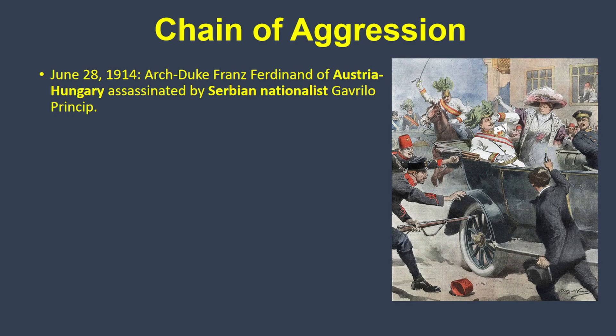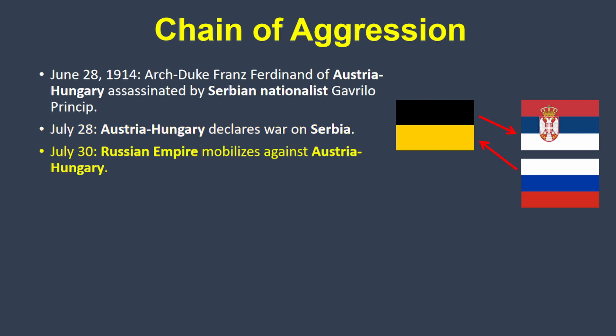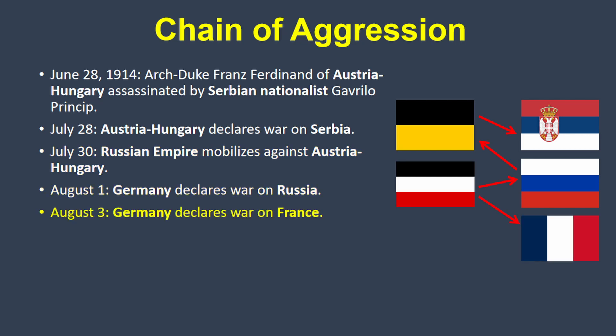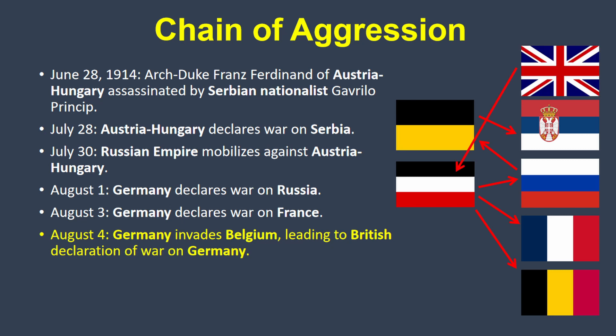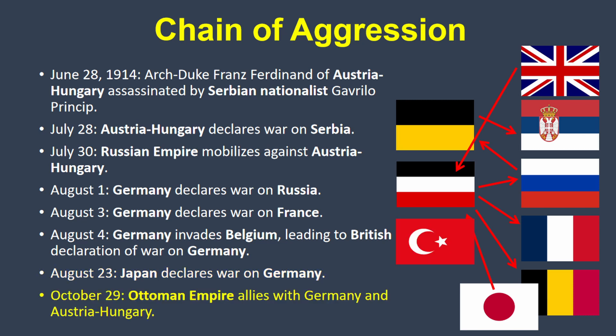On June 28th, 1914, Franz Ferdinand, the Archduke of Austria-Hungary, was assassinated by a Serbian nationalist. One month later, Austria-Hungary declared war on Serbia. Within two days, the Russian Empire mobilized troops to fight Austria-Hungary. Two days after that, Germany declared war on Russia, and then on France two days after that. And then invaded Belgium the next day, causing the British to declare war on Germany. Less than three weeks later, Japan declared war on Germany. Then less than two months after that, the Ottoman Empire allied with Germany and Austria-Hungary in war against the rest.